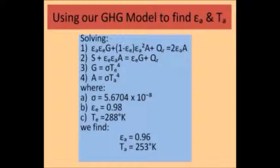Then substituting the Earth's emissivity of 0.98, the Stefan-Boltzmann constant of 5.67 by 10 to the minus 8, and a surface temperature of the Earth of 288 degrees Kelvin, we obtain values for the emissivity of the atmosphere and its temperature. The emissivity Epsilon A is 0.96 and the temperature T A is 253 degrees Kelvin.